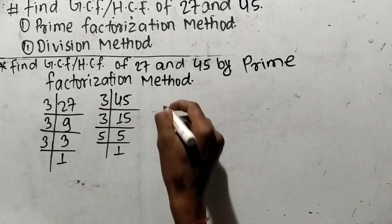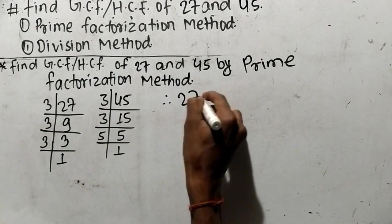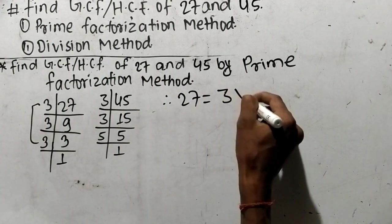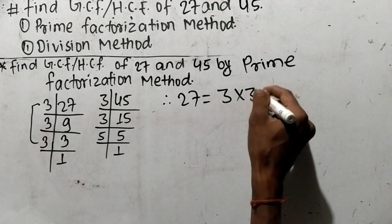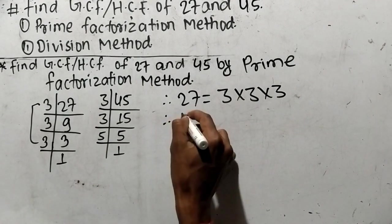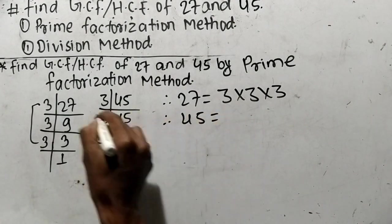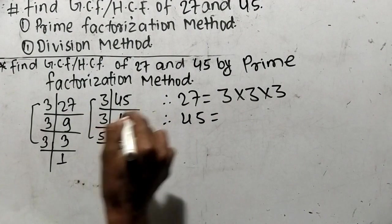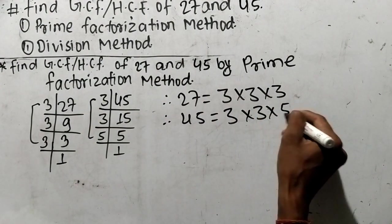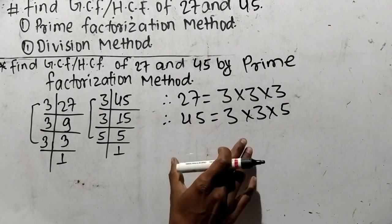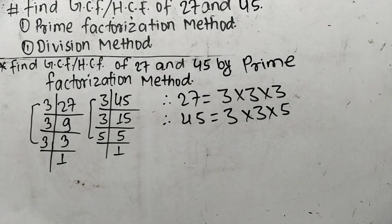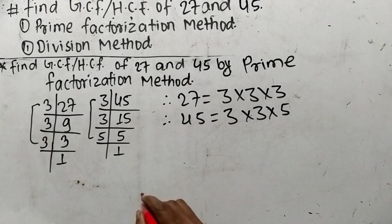So from these prime factors, we can write 27 is equal to 3 times 3 times 3. In the same way, we can write 45 is equal to 3 times 3 times 5. So we have found out the prime factors of 27 and 45.